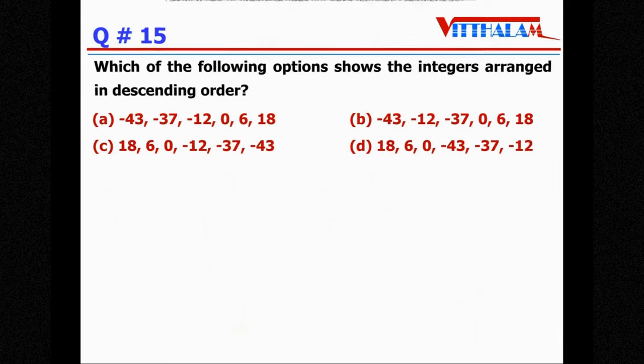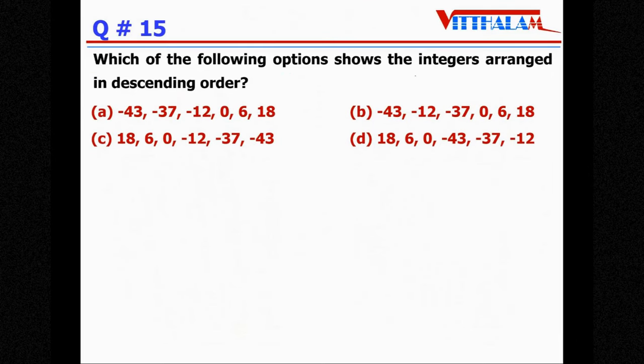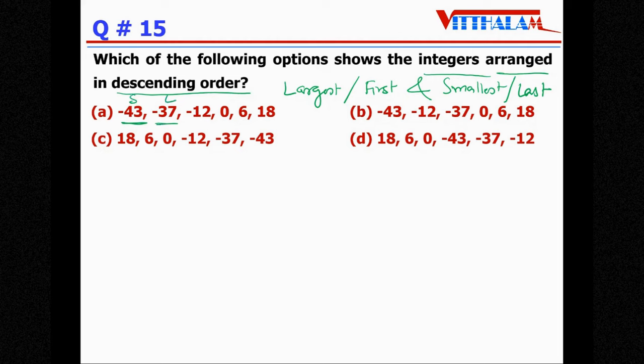Next, which of the following options shows the integers arranged in descending order? Descending order means the largest one is first and the smallest one is last. So let's see the options, minus 43 minus 37, so this one is small this one is large so this is in ascending side so not the descending one, not the answer. Minus 43 minus 12, again ascending one so not the answer.